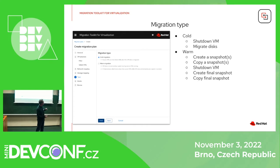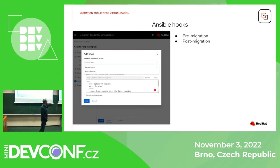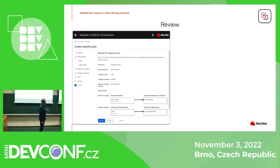In this example I choose cold migration. There are also possibilities to add Ansible webhooks. We can add some tasks we want to do before the migration or after it — some cleanup or changing hostnames, whatever we want to do in the VMs.